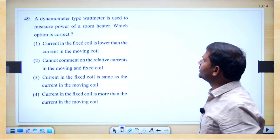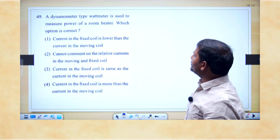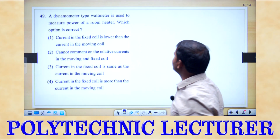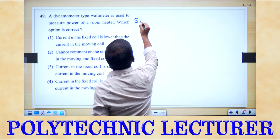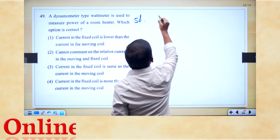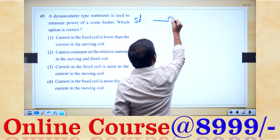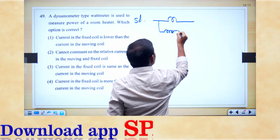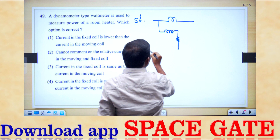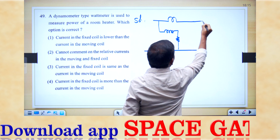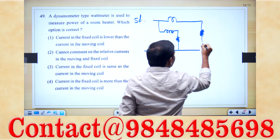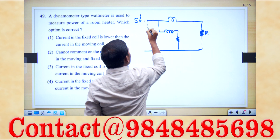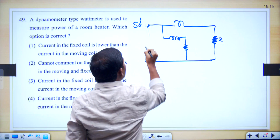A dynamometer type wattmeter is used to measure power of a room heater — which option is correct? In an electrodynamometer type wattmeter there is a fixed coil, also called the current coil, and a moving coil, also called the pressure coil. It is measuring power in the heater, which is an example of a resistive load.